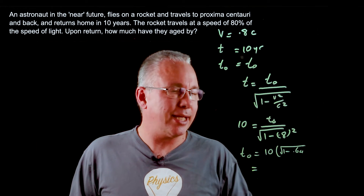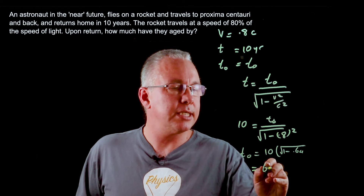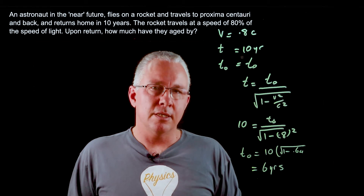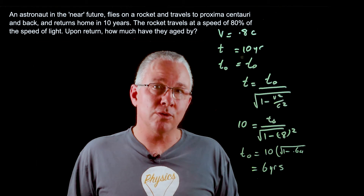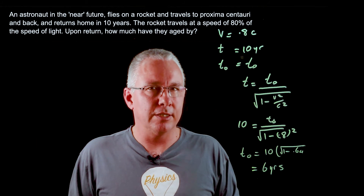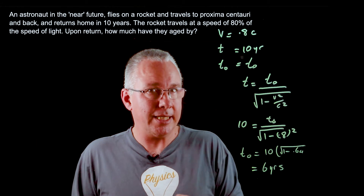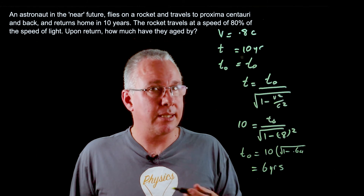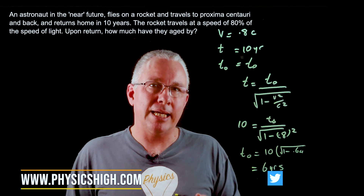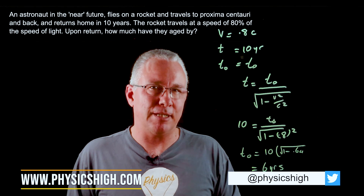When I calculate that out, I get a value of 6 years. So the astronaut has aged 6 years relative to your ageing of 10 years. Sounds weird, but that's time dilation for you. My name is Paul from High School Physics Explained. Take care, bye for now.